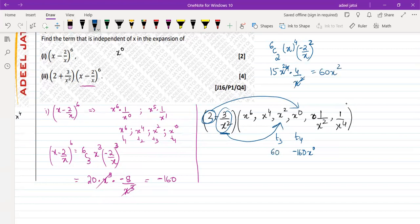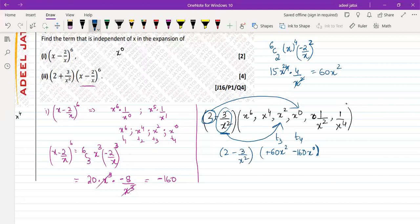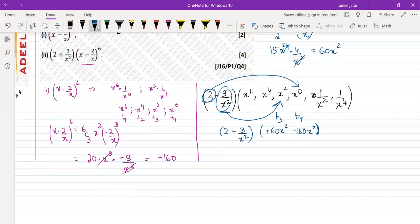So that means your third term is 60 x square positive. So these are the two terms that will be multiplied with 2 minus 3 upon x square to have 4 independent of x. So if we multiply 2, so if we multiply 2 with minus 160 x square,